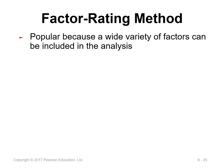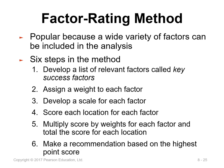This is called the factor rating method. It is popular because it can be used with a wide variety of factors — from education to recreation to labor skills — and allows inclusion of both objective and subjective factors. The six steps are: (1) develop a list of relevant factors — key success factors; (2) assign a weight to each factor; (3) develop a scale for each factor; (4) give a score for each location; (5) multiply each factor's weight by its score and sum to get the total weighted score; (6) make a recommendation based on the highest point score.